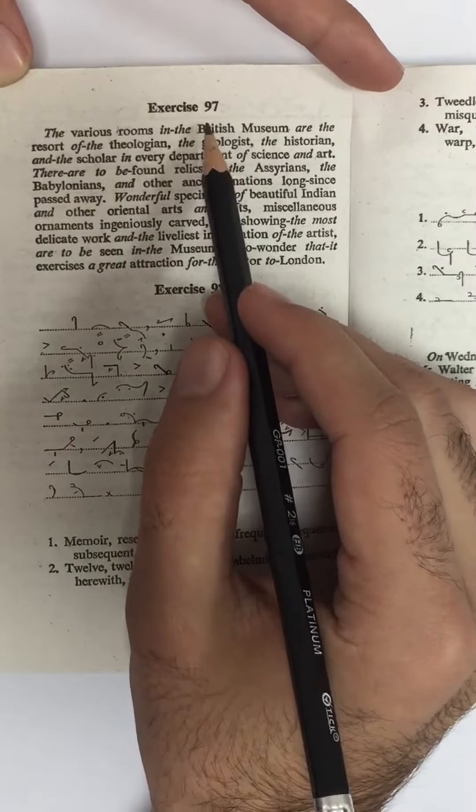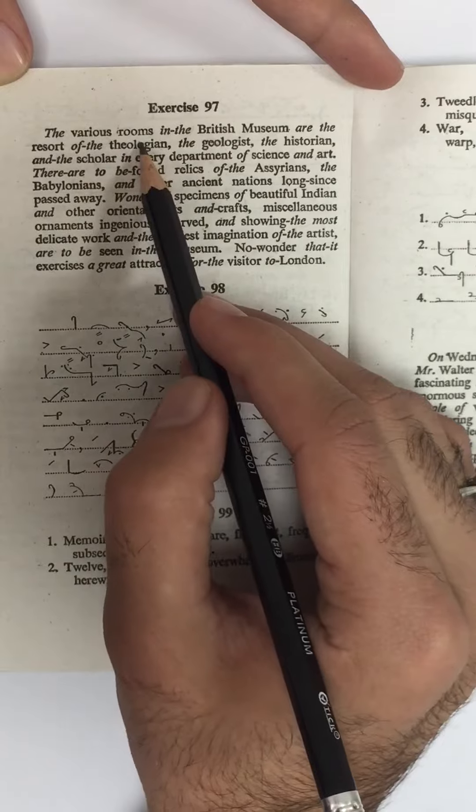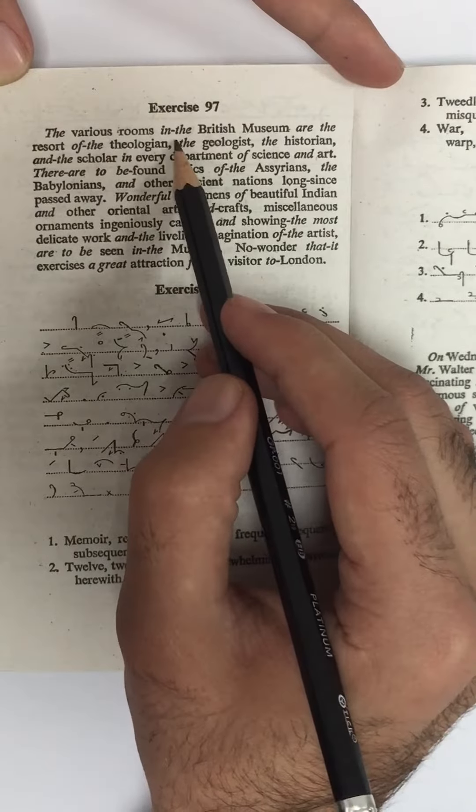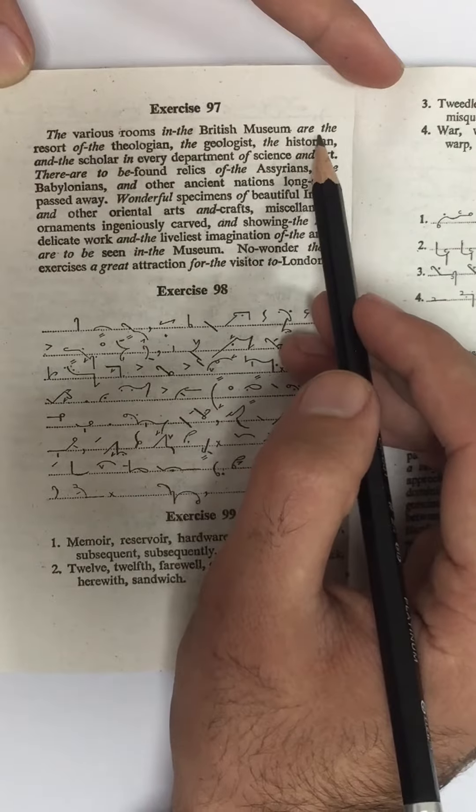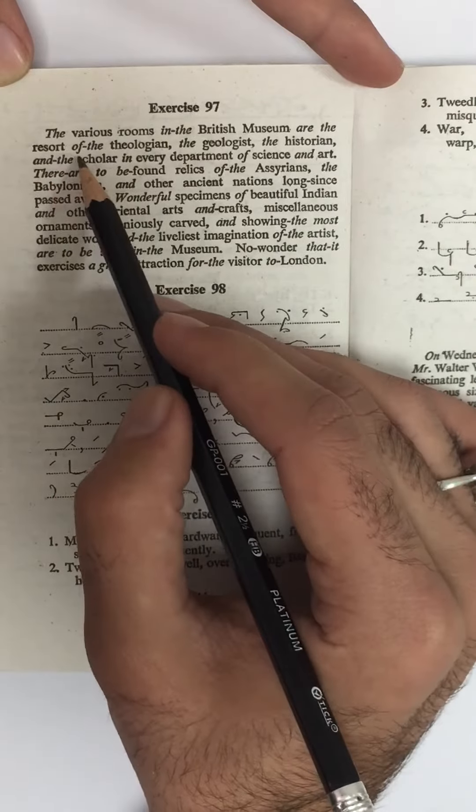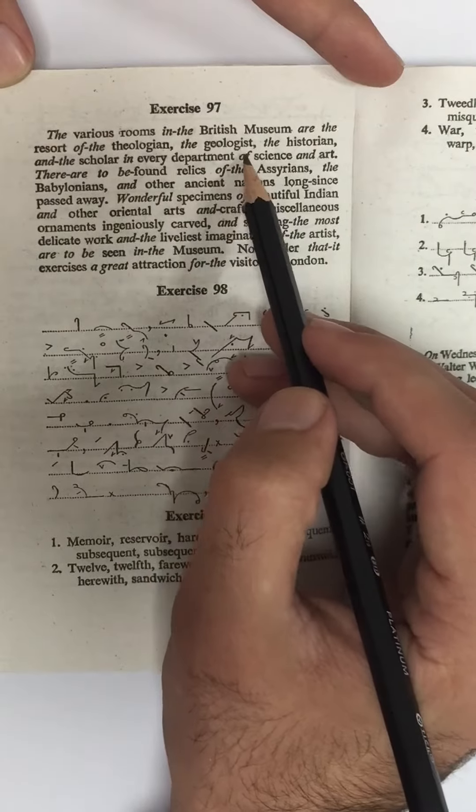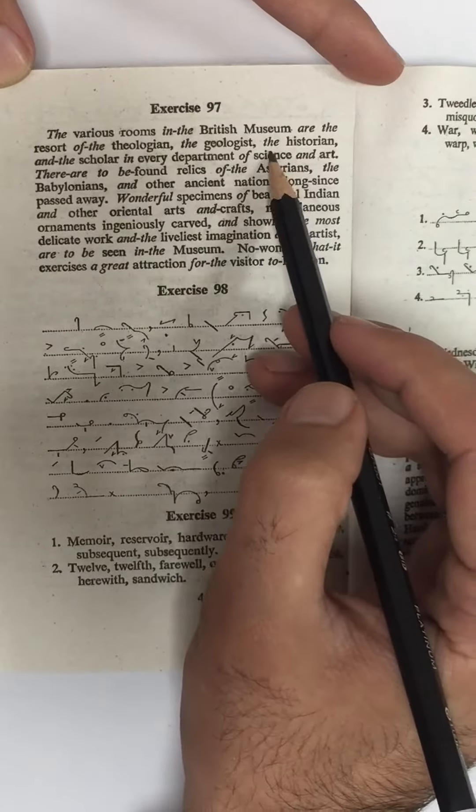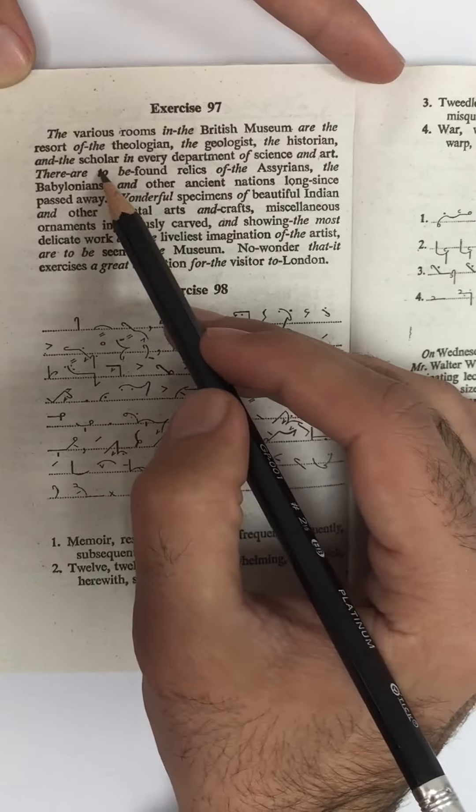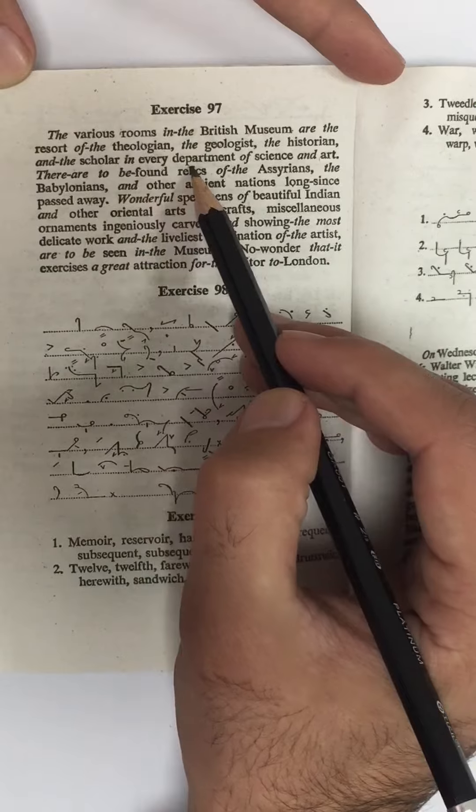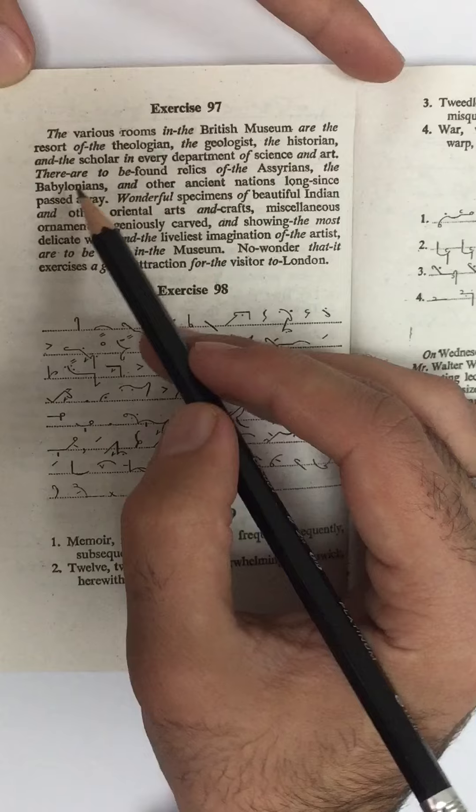Dictation exercise number 97. The various rooms in the British Museum are the resort of the theologian, the geologist, the historian, and the scholar in every department of science and art.